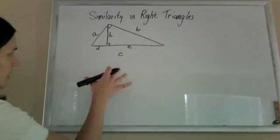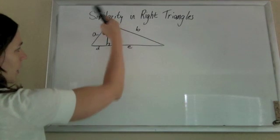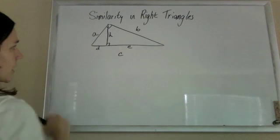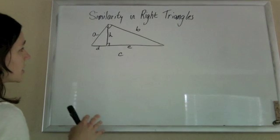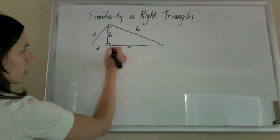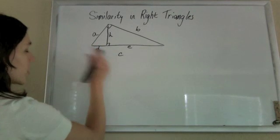So what that does is it created, now I have three triangles. I've got this big outside triangle, and I have this little triangle and that little triangle, and all of those triangles are actually similar because they share an angle.